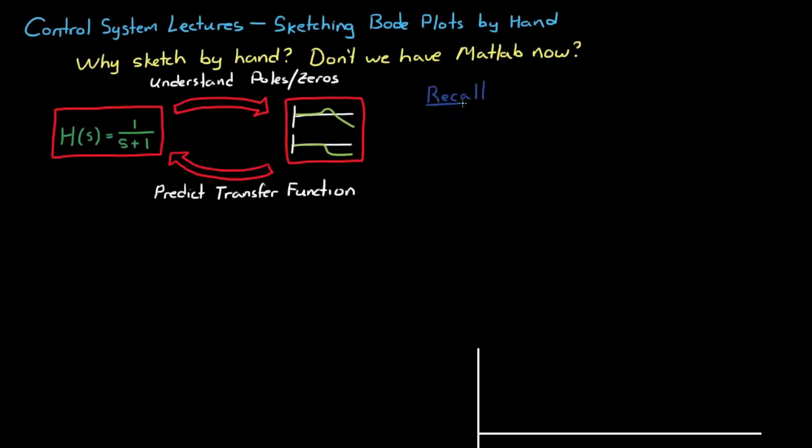So recall now from the introduction to the Bode plot video, that when you have a transfer function H, you can calculate the steady state frequency response by setting s to jω. Then you can solve for the real component and the imaginary component and rewrite H as just the real component plus the imaginary component times j.